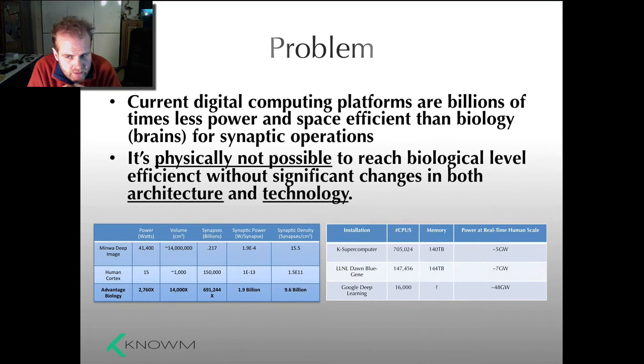We marched on and kept going, but we're hitting up against limits right now. The problem is that our current digital computing platforms are billions of times less power and space efficient than biology for synaptic operations, for intelligent functions—those things our brains do that we want our machines to do. When you look at the physics of it, it's impossible to reach biological level efficiency without some very fundamental changes in both our architecture and our underlying technology. We're not going to get there doing the same thing—smaller, faster transistors won't help us. Besides, we're not going to have smaller, faster transistors, at least with what we have now, and even if we did it still wouldn't work.